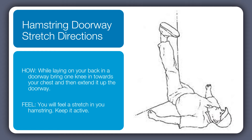Beginning with the Hamstring Doorway Stretch: set yourself up so you can walk one leg up the wall beside the doorway, with the other leg inside the doorway. Gently bend the knee and walk the foot up. Once the foot is all the way up the wall and the leg is straight, gently draw the toes towards the head — this is called dorsiflexion — and hold the stretch. You can do reps or hold, depending on your goals and any specific recommendations from your trainer.